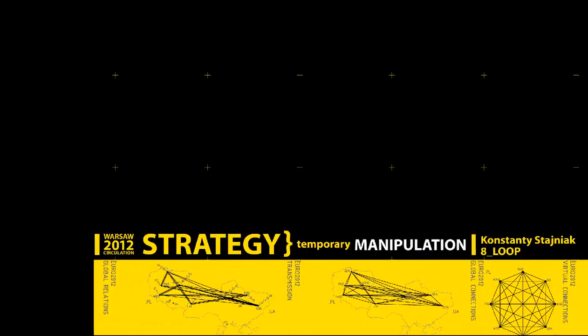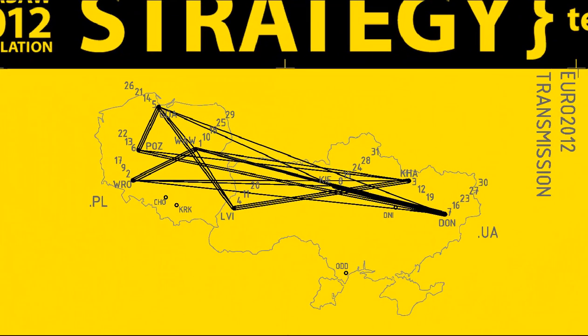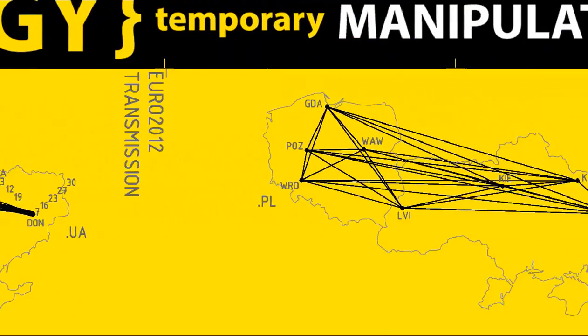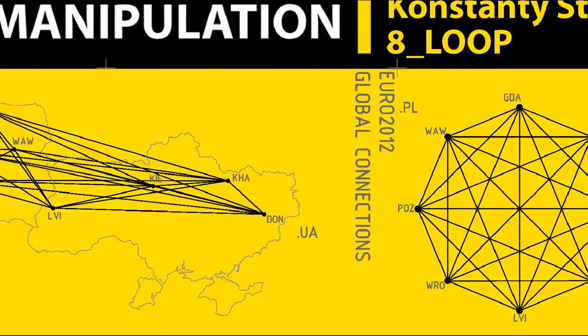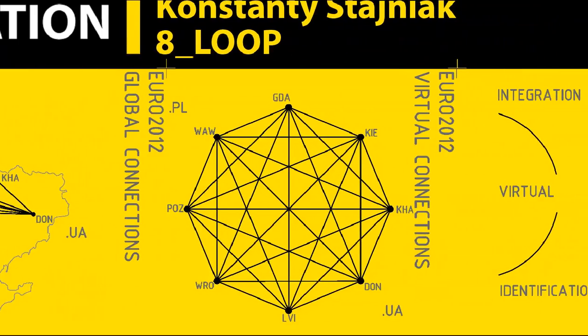Every object works at different scales. At the global scale, what is important are global relations like transmission, global physical connections between cities, virtual connections, and personal connections.